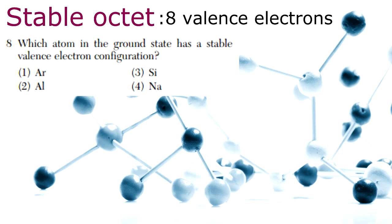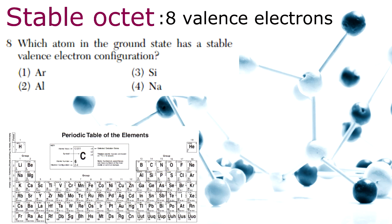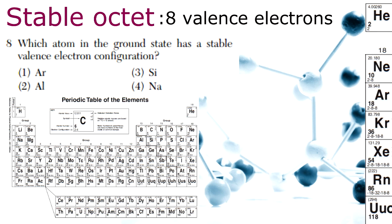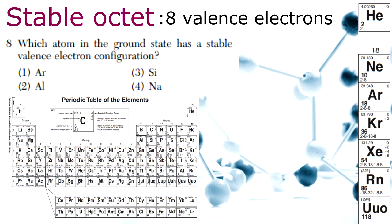If you look on the periodic table in the chemistry reference packet, most elements with stable octets can be found all the way to the right of the table in Group 18. Group 18 is also the site of the noble gases. So all noble gases, excluding helium, have stable electron configurations.